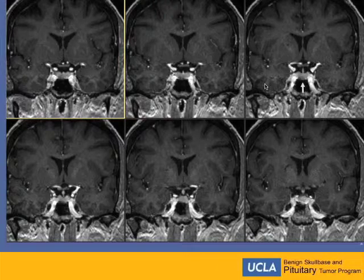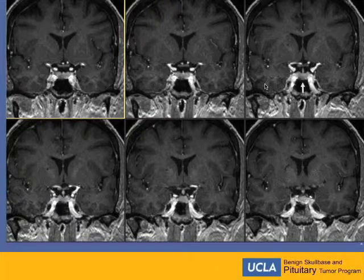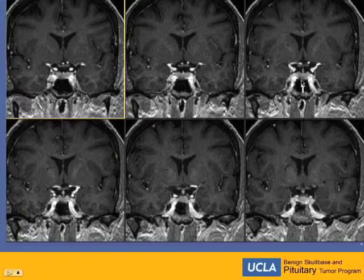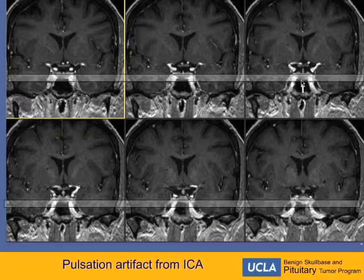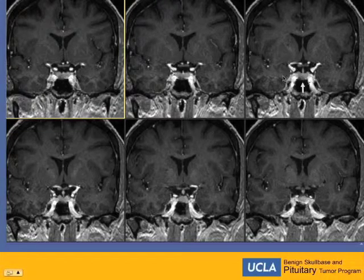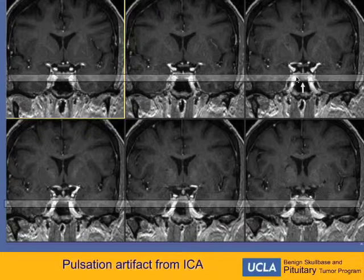One thing we do is use an isometric post-contrast volumetric study — a 0.9 millimeter isometric volume sequence, which allows reconstruction afterward. One thing we have to be careful about: you can see with the white arrow that the inferior central portion of the pituitary gland has a hypo-intense, hypo-enhancing focus, which looks almost like the first case. But if you pay attention, this area has a pulsation artifact from the carotid ICA. You can see a little line going through — this is a very common place for that artifact in the inferior pituitary gland, and it really mimics the sign of a pituitary adenoma.